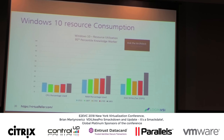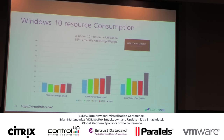Daniel Feller recently wrote a blog about resource consumption in Windows 10, looking at CPU percentage of utilization, percentage of RAM being used, and IOPs. The information is a bit counterintuitive: CPU utilization decreases as we get up to 1703, but as we go toward 1803 we're using more and more. The point is that you need to test and use some mechanism to figure out what the real impact of these things is.